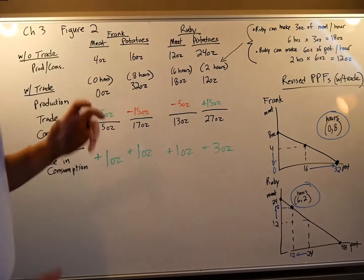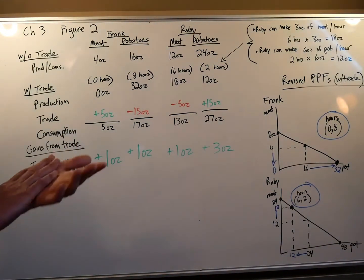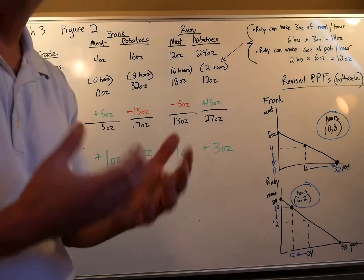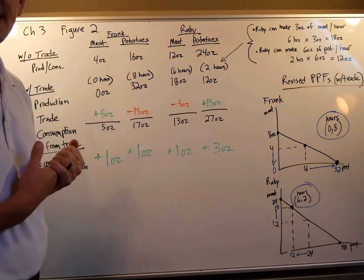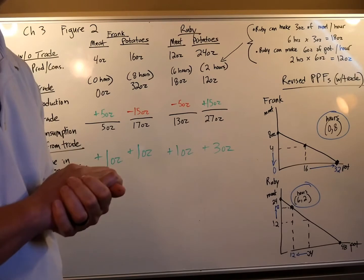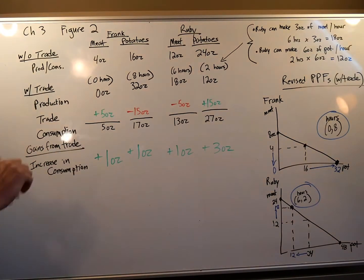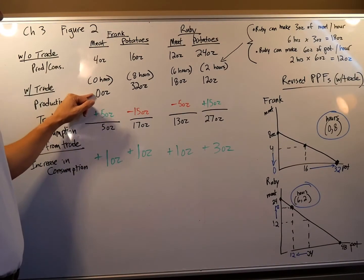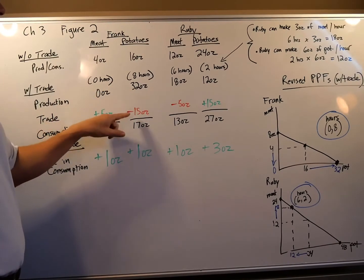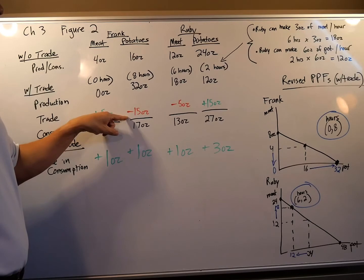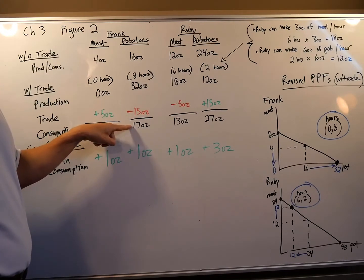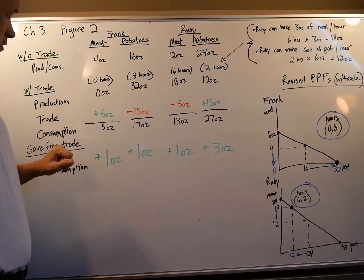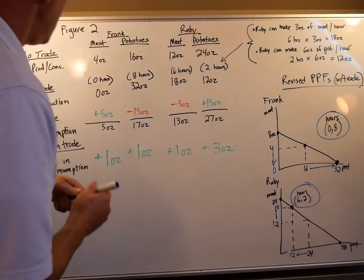Ruby realized she had something to trade with Frank. Even though she has absolute advantage, she has a comparative advantage in making meat, and Frank has a comparative advantage in making potatoes - that's why she asked him to specialize. Ruby proposed: Frank, since you're producing all potatoes, send me 15 ounces of the 32 you produce. That leaves you with 17 ounces of potatoes, and in return I'll send you five ounces of meat.